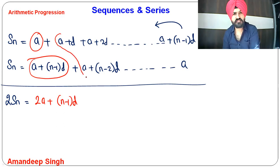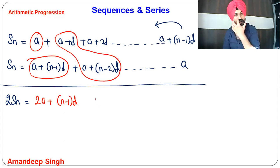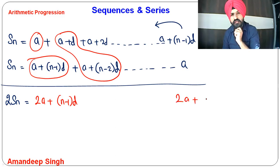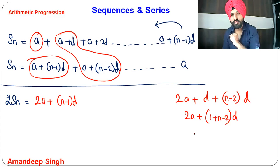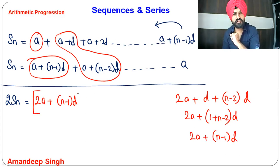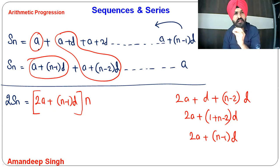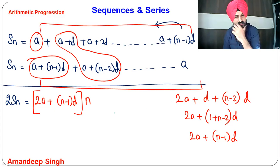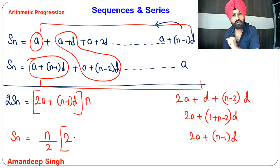If you add the second term and the second last term, you also get 2A plus D plus N minus 2 times D. Simplifying: take 2A, remove D common, you get 1 plus N minus 2, which gives 2A plus N minus 1 D. That means every pair gives the same sum. There are N terms total in each written order, so 2 times SN equals N times that sum, giving SN equals N by 2 times 2A plus N minus 1 into D. This is the basic derivation.